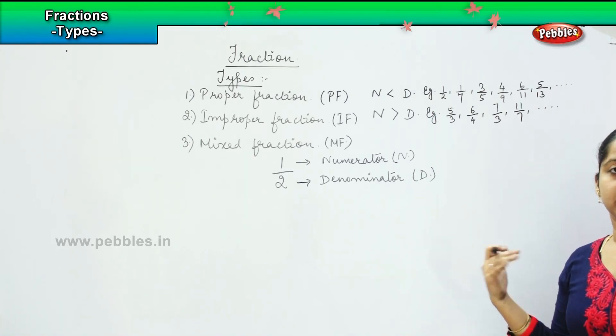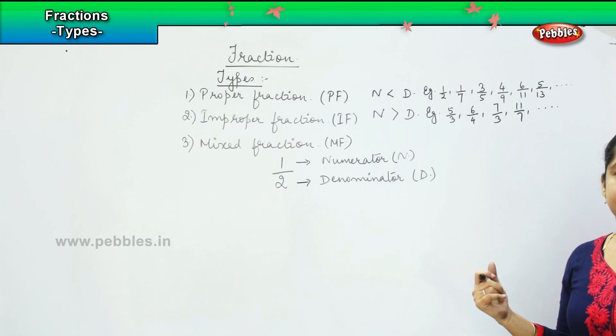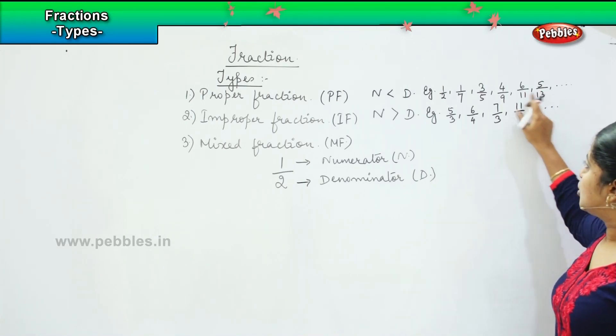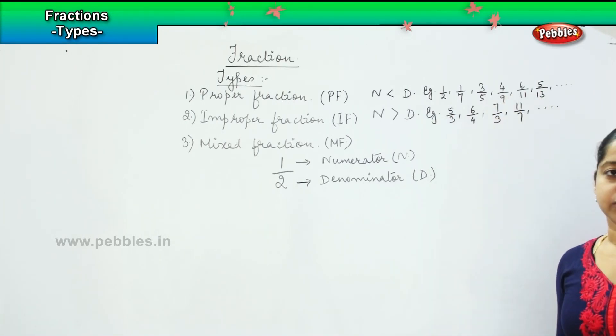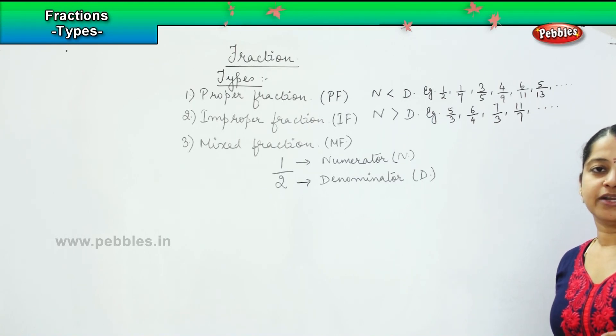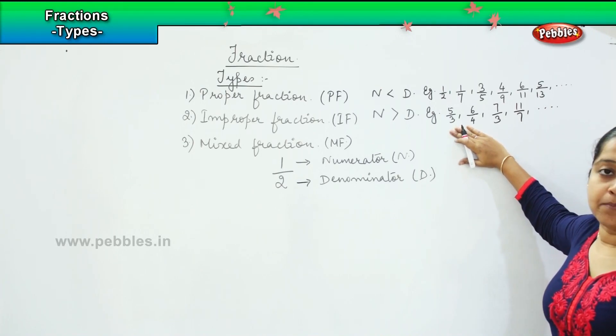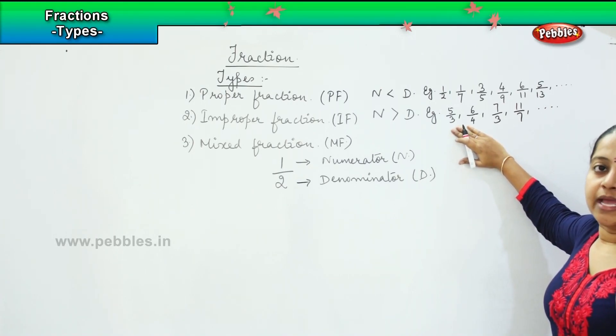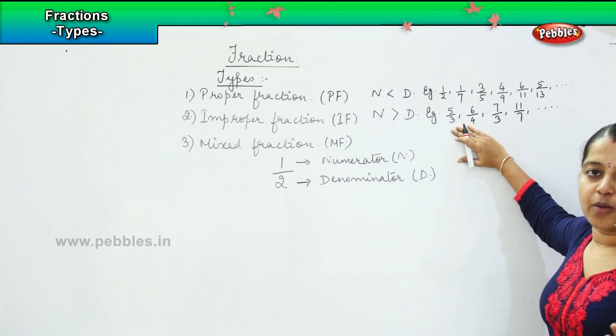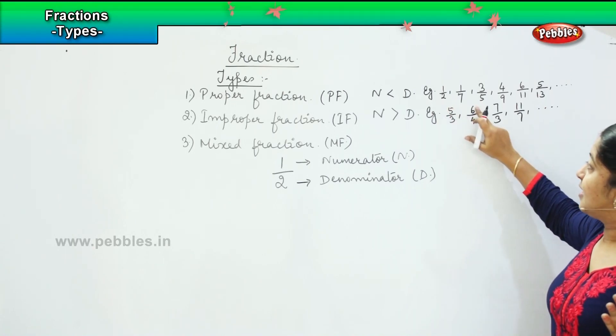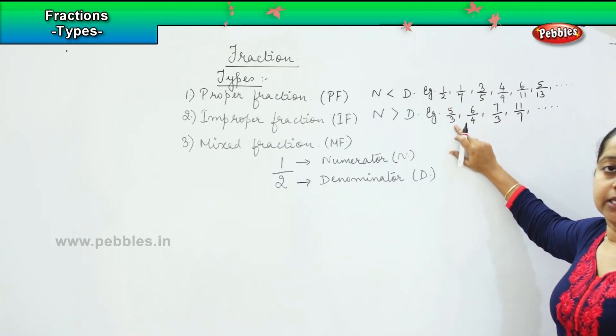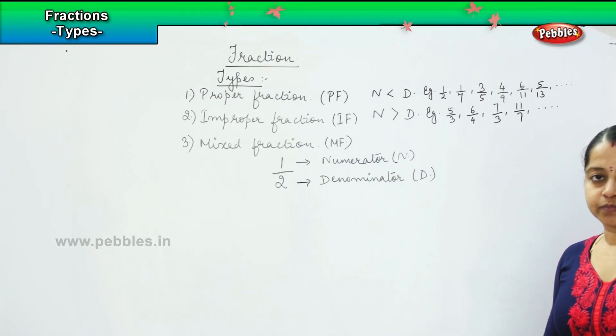It also sounds something very fuzzy, right? When you see a number like this, you don't understand what they're trying to say because always the denominator will be higher and the numerator will be less. So this is something which is improper, which is not accurate. That is why it is named as an improper fraction where the numerator value is higher than the denominator value.